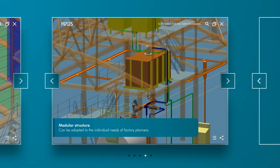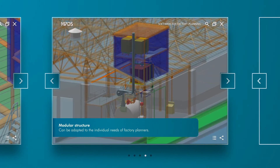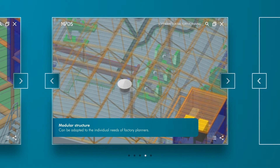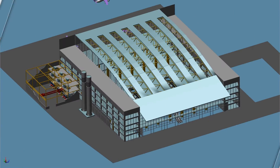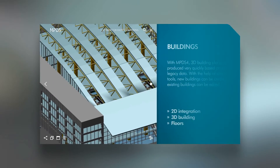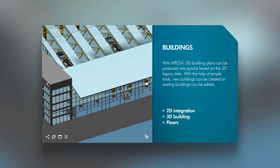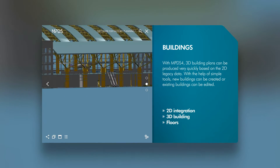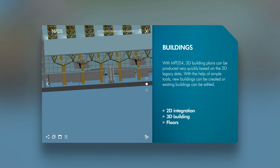MPDS-4 is equipped with a very wide range of functions that allows you to quickly design and modify plants in 2D and 3D. Due to its modular design, MPDS-4 can be tailored to your specific needs and grow with your business.